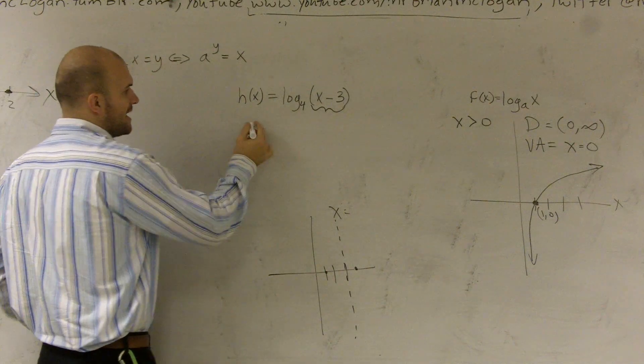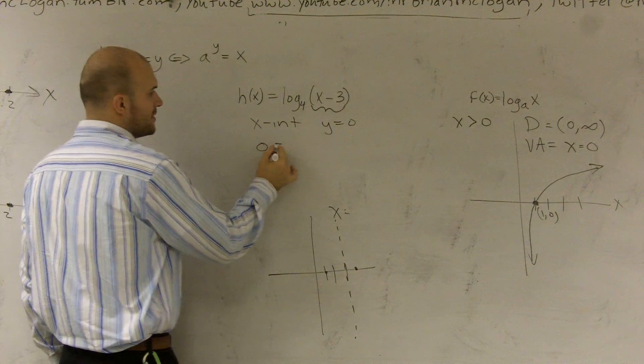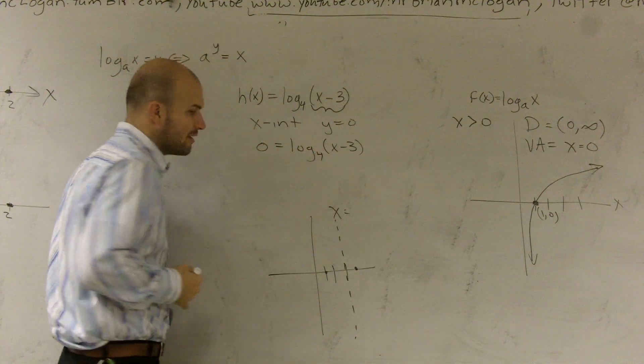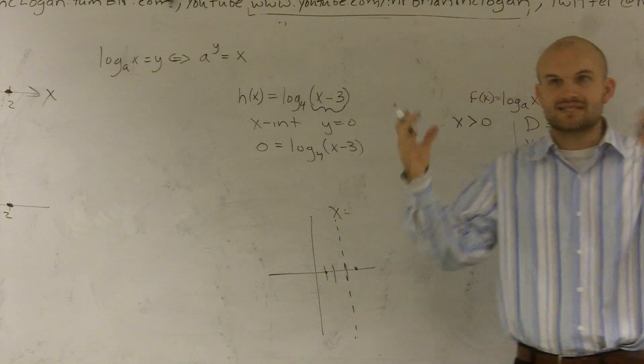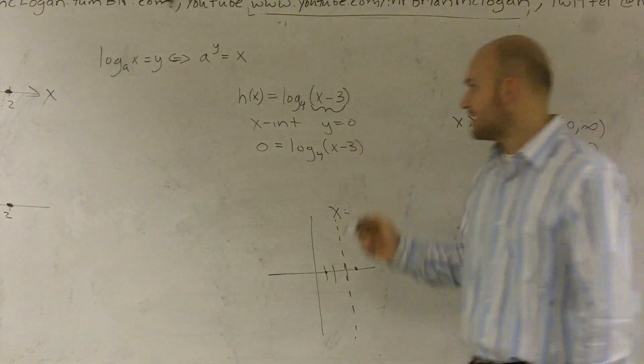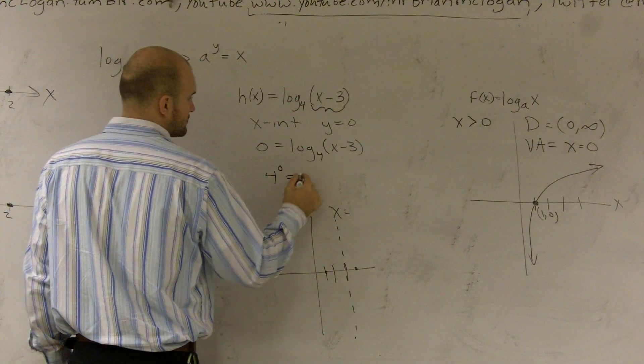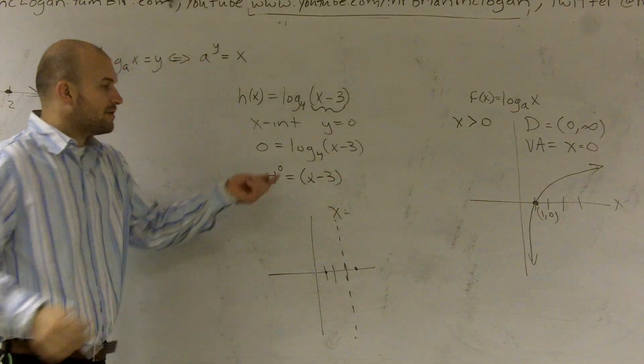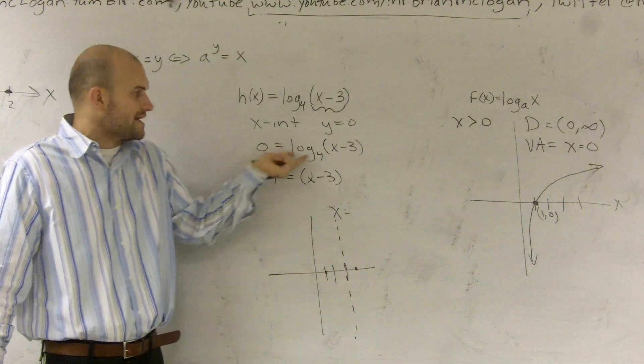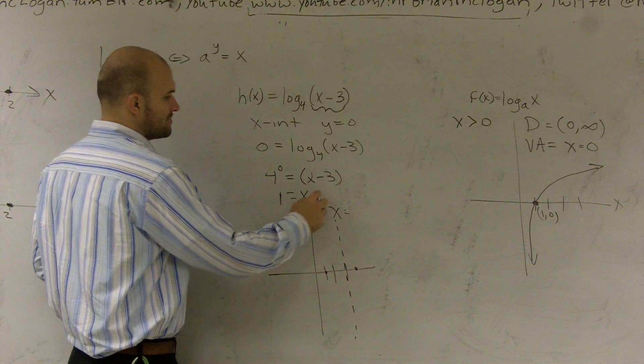So when we want to find that x-intercept, we know that y equals 0. So again, I do 0 equals log base 4 of x minus 3. Now remember, since it's in parentheses, we can treat it as a term together. OK, we don't separate it, it's together. So I write this as exponential form, right? Because remember, if we have a logarithmic form, we don't know how to solve this. The only thing we know how to do is transfer it to exponential form. 4 raised to the 0 power is 1 equals x minus 3.